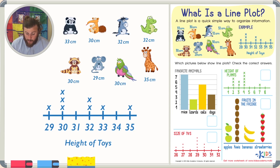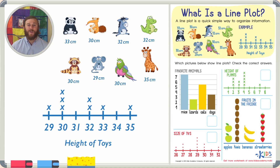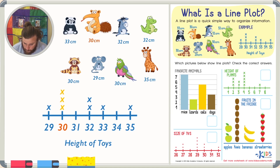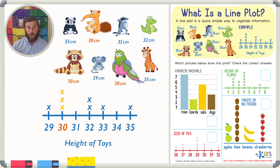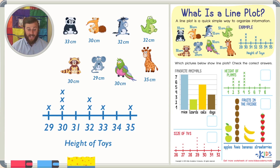By looking at this line plot, there is one animal that is 29 centimeters tall — that's the mouse. You'll also see that there are three animals that are 30 centimeters tall, represented by three X's. A line plot is really just a nice, easy way to organize information.